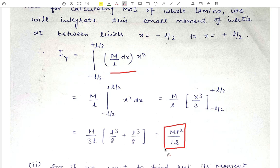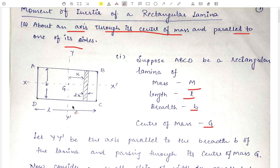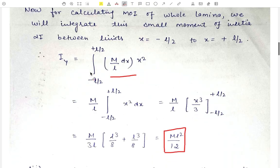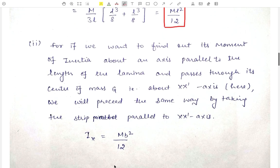In the same way, if we have to find out the moment of inertia of the lamina about the axis XX', which is parallel to its length side and passes through the center of mass, then by analogy that will be equal to M·B²/12. This is the required moment of inertia about the axis XX'.